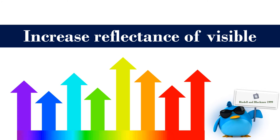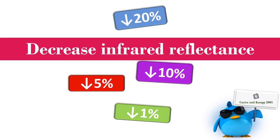Consequently, infested plants are likely to reflect more energy within the visible spectrum than plants with no insects. The plant reflectance of infrared wavelengths is affected differently by insects. Insect stress is likely to decrease the reflectance of infrared wavelengths.